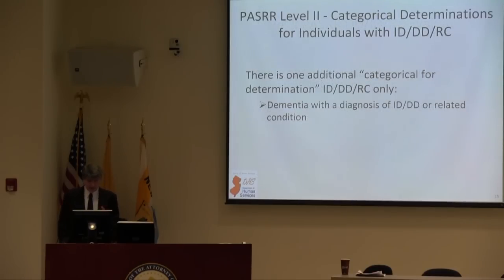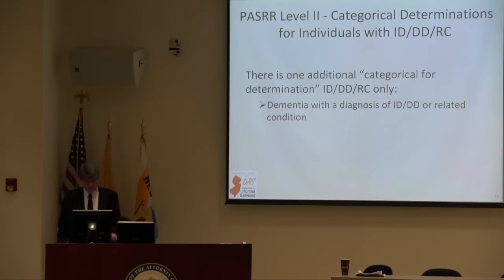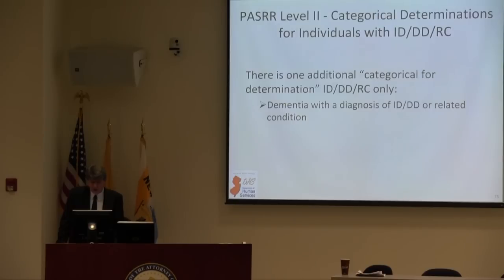The Division of Developmental Disabilities has an additional categorical determination beyond the four I mentioned, which is for someone with dementia as a diagnosis by a treating physician for related conditions.